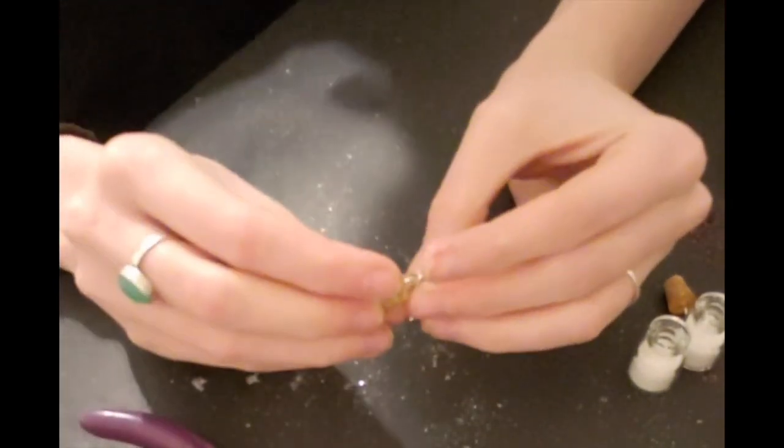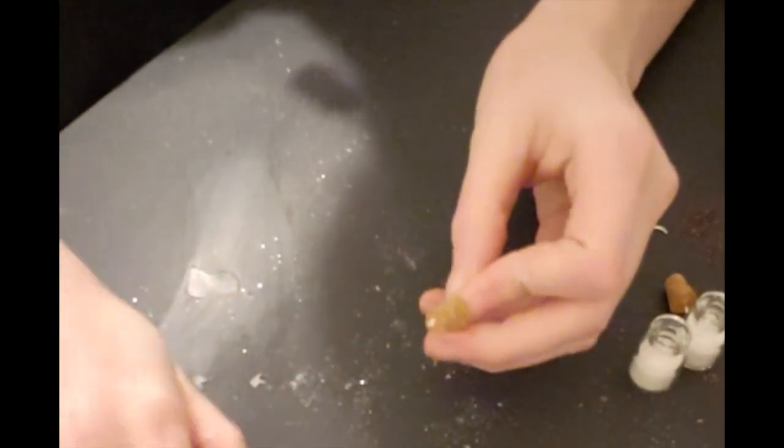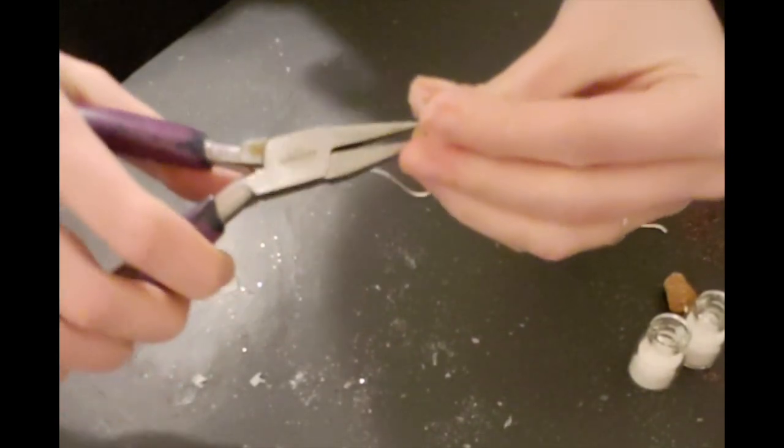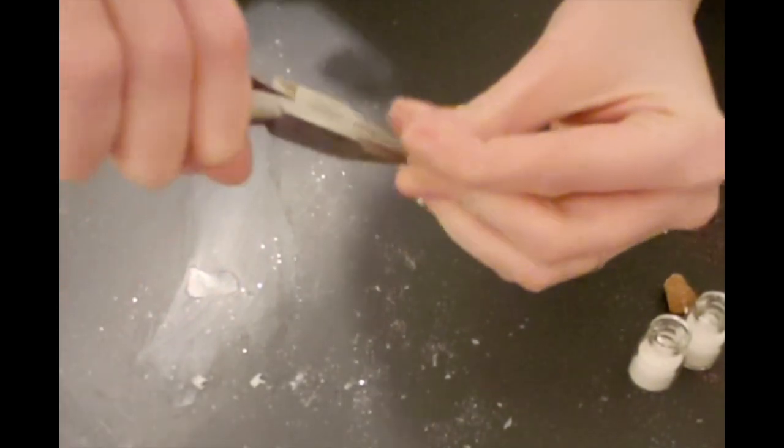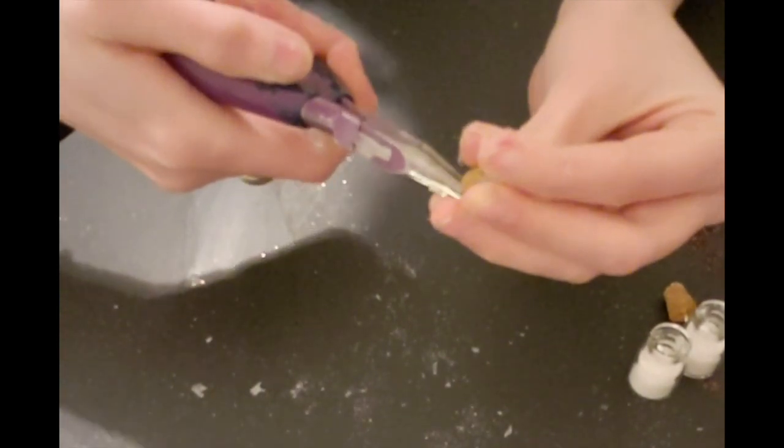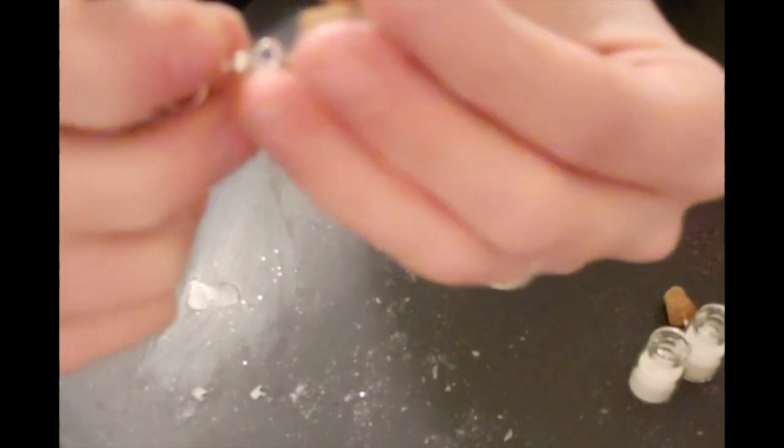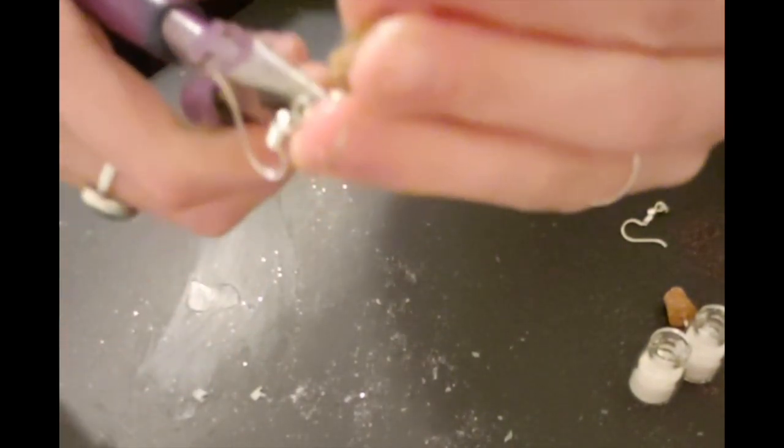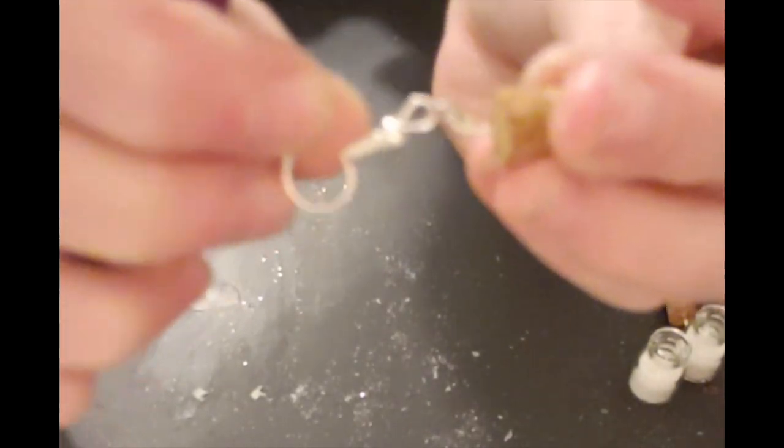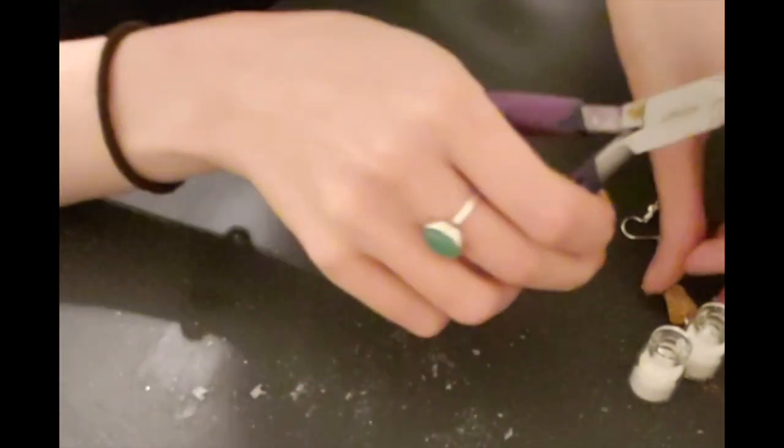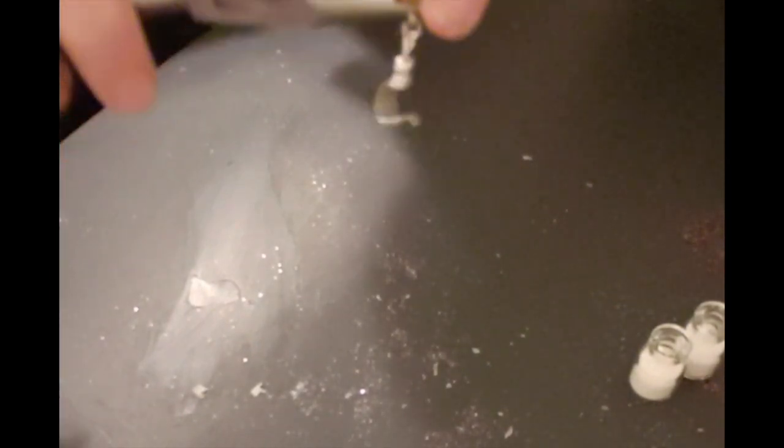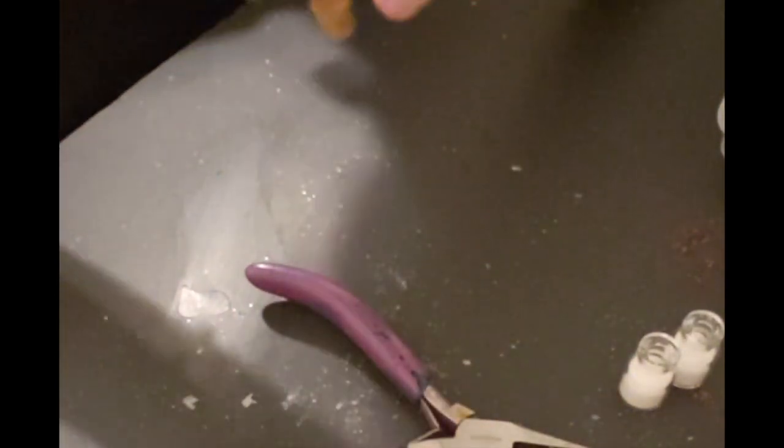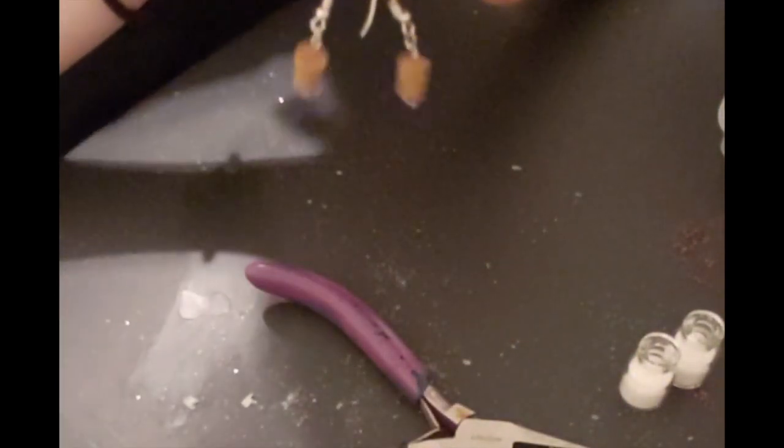So we're going to go ahead and take it and hook it on that jump ring that we just closed up. And the reason we put jump rings on there instead of just putting it on the earring hook is it lays nicer and it looks better when it's finished. You're going to go ahead and pinch your little loop closed with that jump ring inside of it. So you've got that nice and closed. We'll go ahead and do this one. Link it in there. Pinch it closed. Okay, so that's all of those are done. Now you could stop here if you wanted and just have cute little cork earrings.